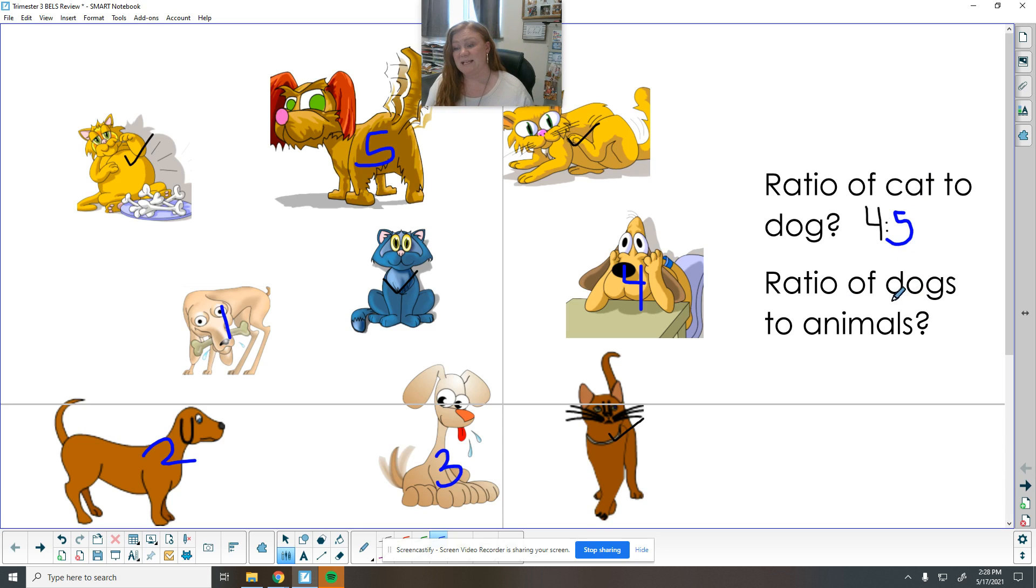So this next one asks dogs, which we know is five. We just counted those to the total animals. Including the dogs, there are four cats, five dogs, makes nine total. So that total includes everything, including the ones we've already looked at.